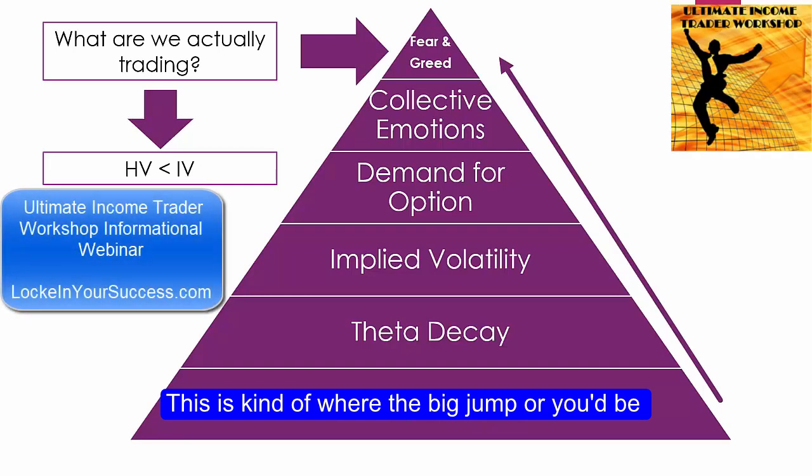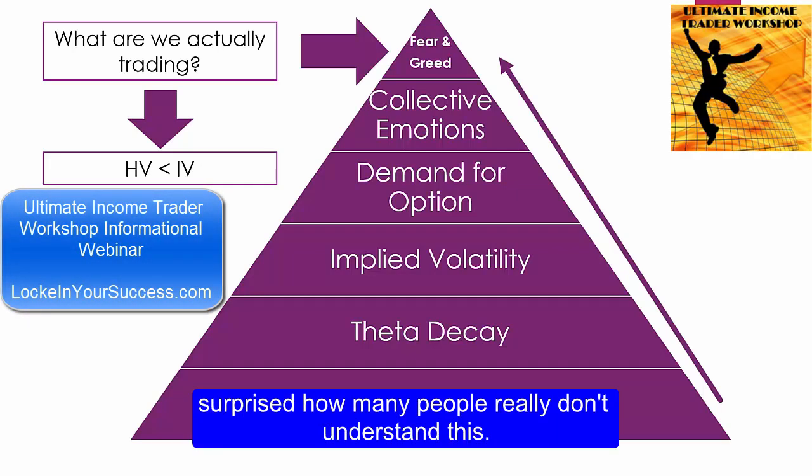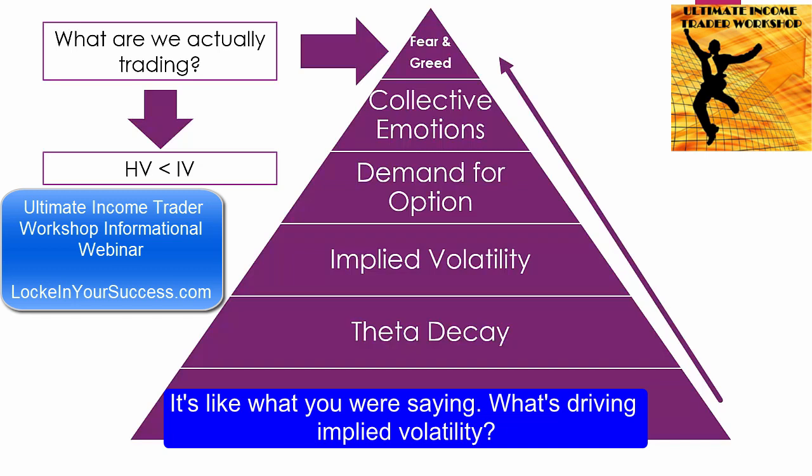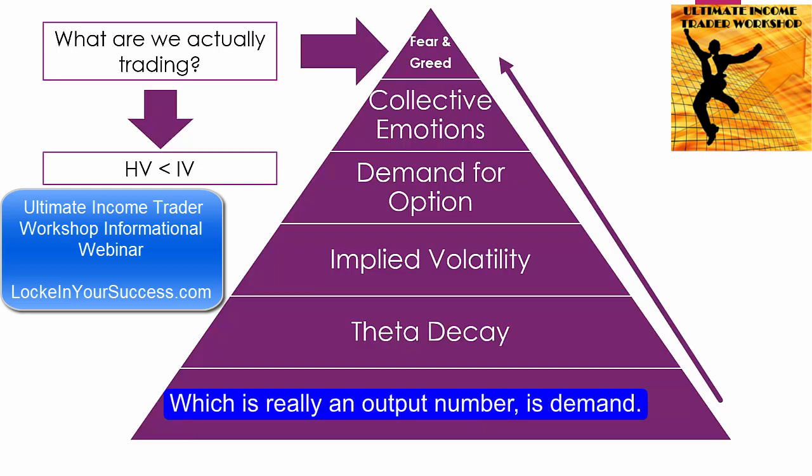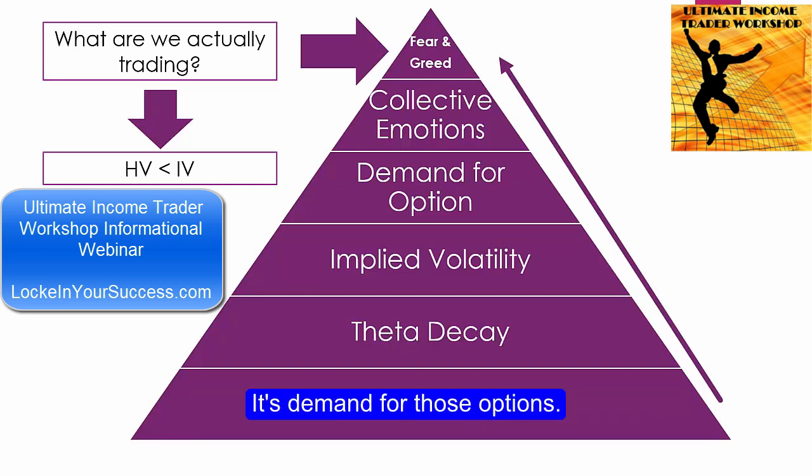This is kind of where the big jump is, and you'd be surprised how many people don't really understand — what's driving implied volatility, which is really an output number, is demand. It's demand for those options.